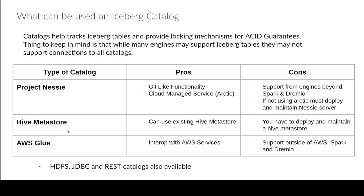There's also the JDBC catalog option. What if you have a Postgres database that's already operational in your stack? You could use that Postgres database, a DynamoDB, or really any database that supports the JDBC implementation of Iceberg - connect to it and use it as your catalog.